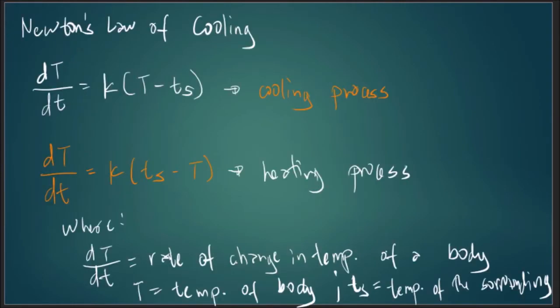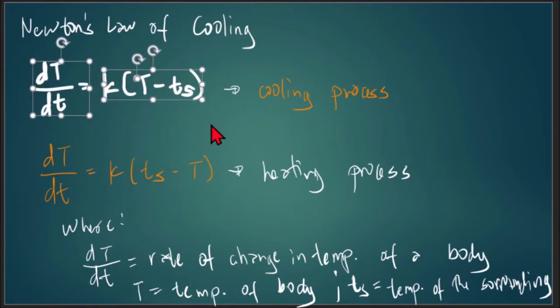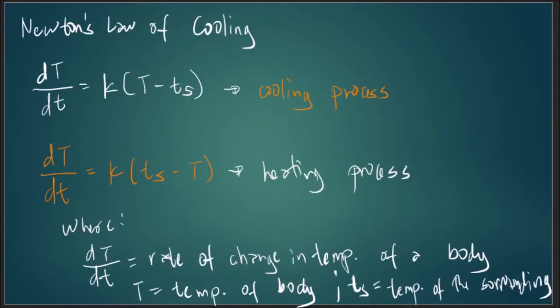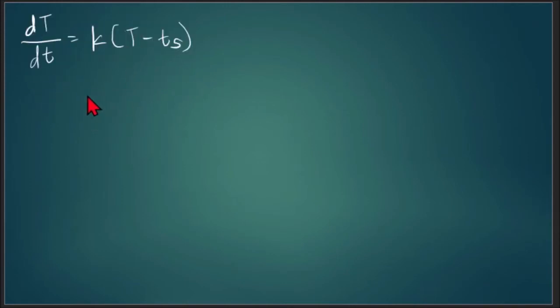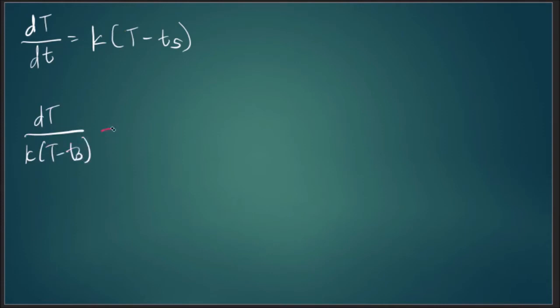For the cooling process, we transpose to get dT over (T minus T sub s) equal to k dt. Integrating both sides, you will end up with ln|T minus T sub s| equal to kt plus C. We could put our k on the other side of the equation so that we will have a much simpler solution.